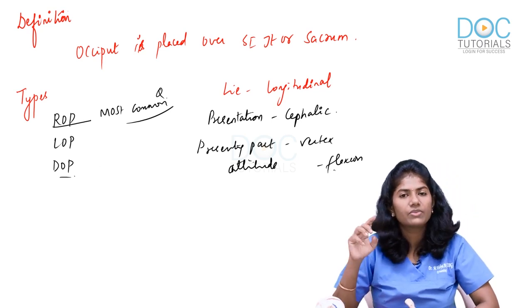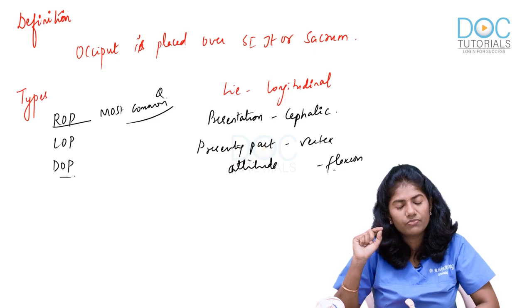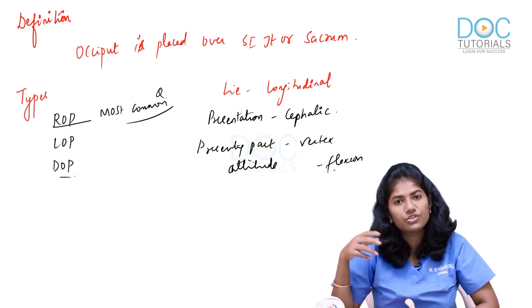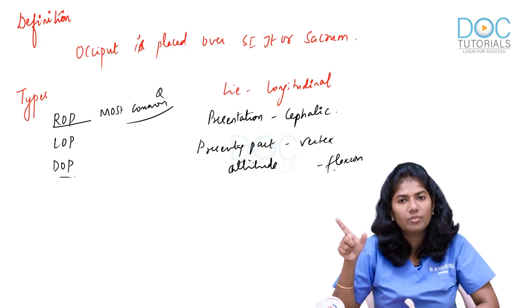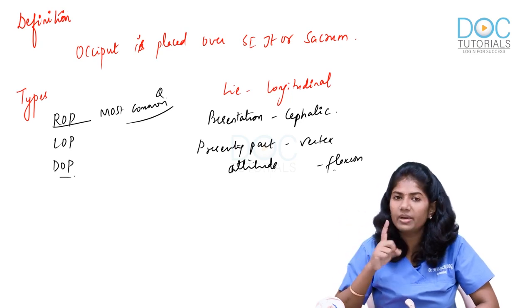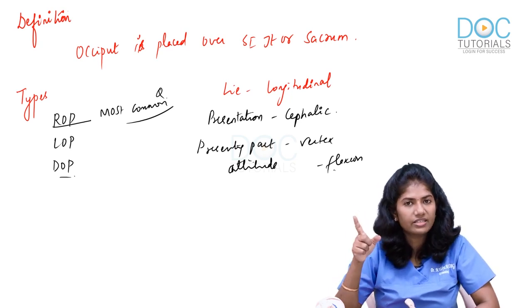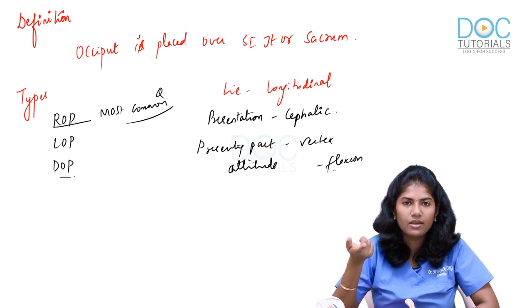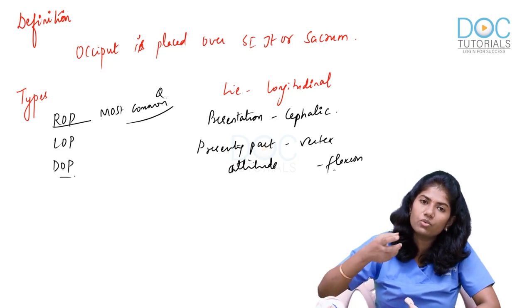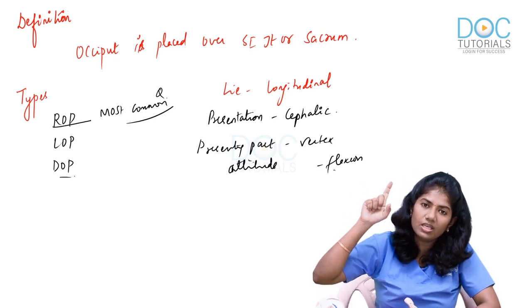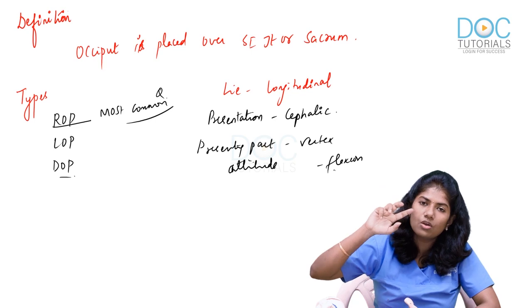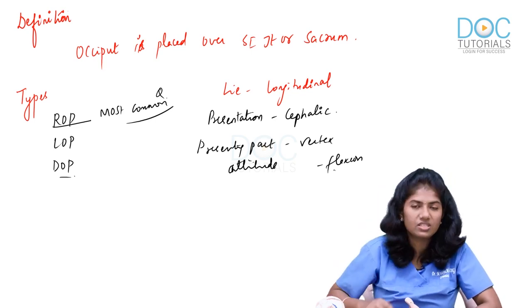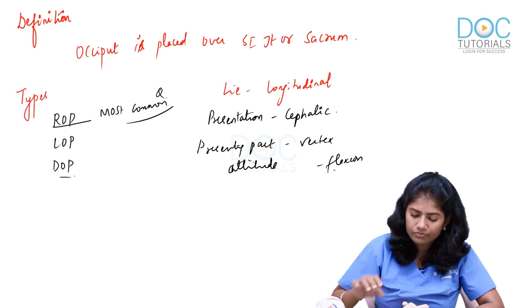Remember there are three rules for delivery. Rule number one: irrespective of where your denominator is during engagement, the denominator — whether occiput or mentum — should come to either the direct anterior position or the direct posterior position for delivery to occur. So even if it is right posterior, the occiput has to rotate to either the pubic symphysis or the sacral promontory.